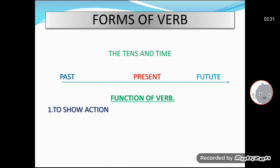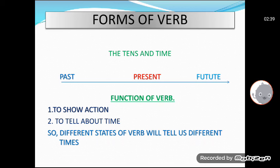Now, function of verb here is to show action and to tell about the time. As I gave you example, it does both tasks. So different states of verb will tell us different times. This means that when verbs are different, their states are different, they will tell us different times. Clear?